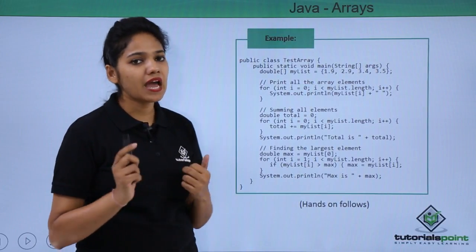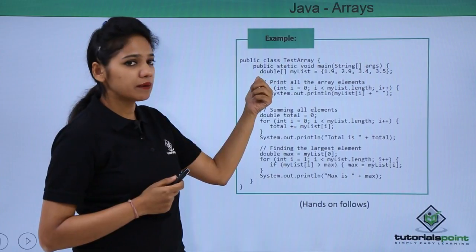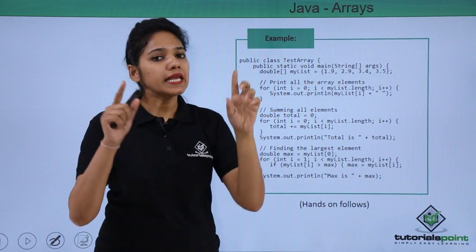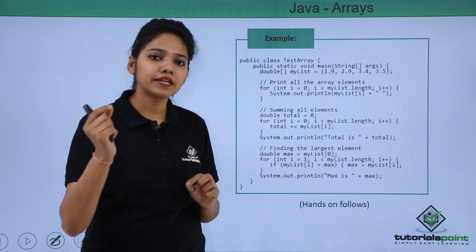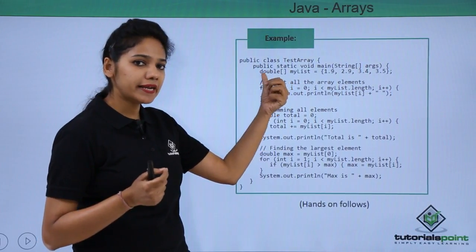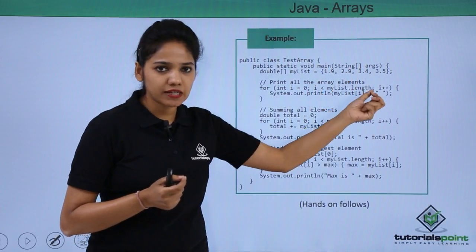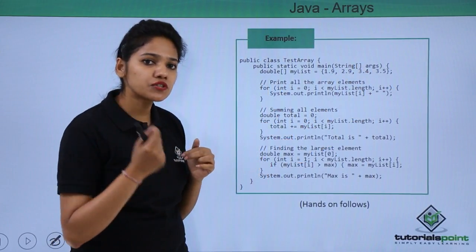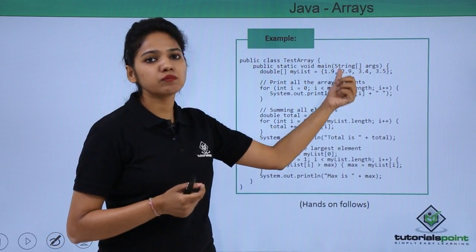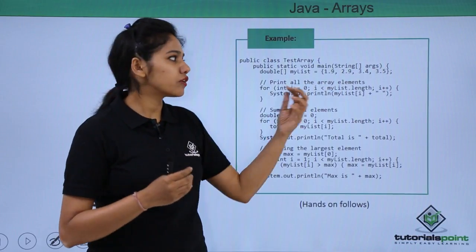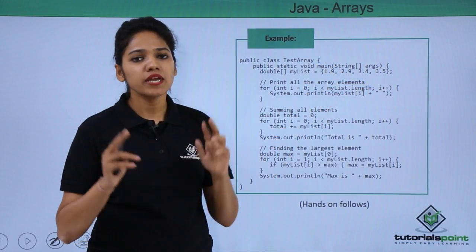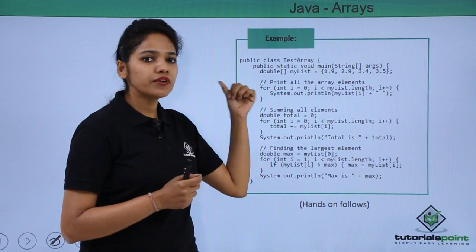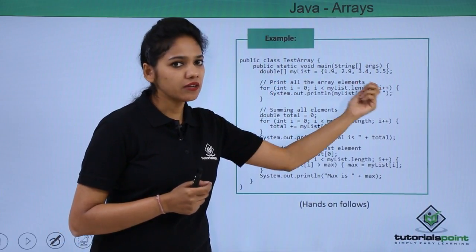Let us see an example of how you can work with an array. You create: double[] myList = { values separated by commas }. If it were integer type you would write 1, 2, 3, etc. Because it is double we write decimal values. If you wanted to traverse elements of string type you would write string and provide names like India, Australia, US in inverted commas separated by commas. You end with a semicolon. In this case we have declared and initialized an array with certain values.